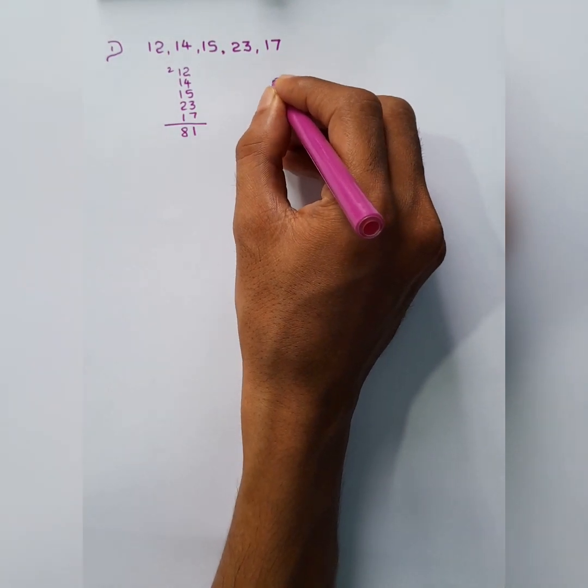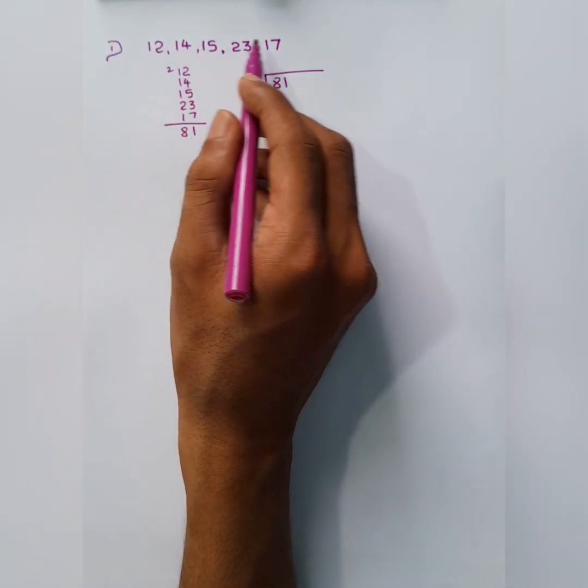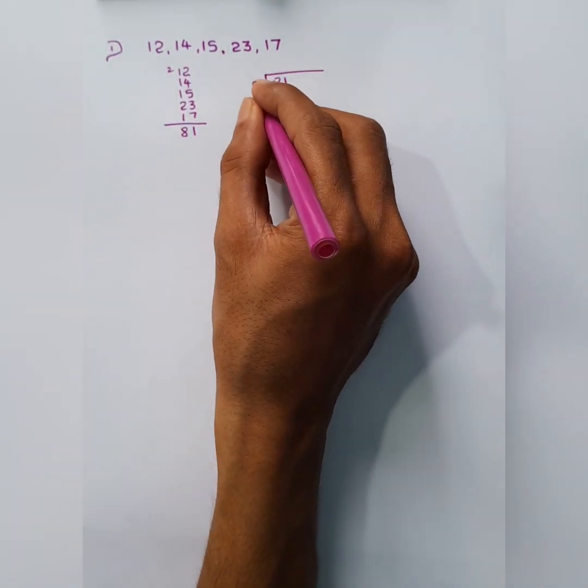Okay, that's 81. So how many data are there? 5. So we have to divide this 81 by 5.